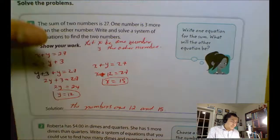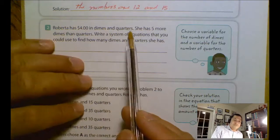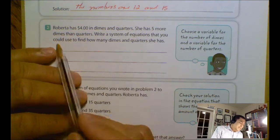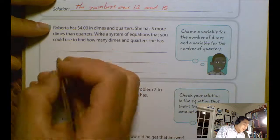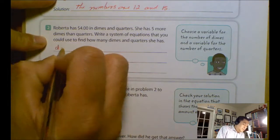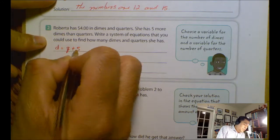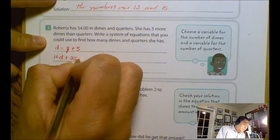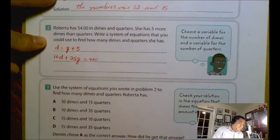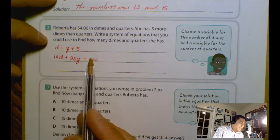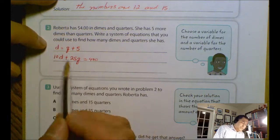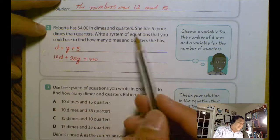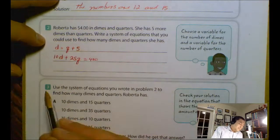Problem number two: Roberta has $4 in dimes and quarters. She has five more dimes than quarters. Write a system of equations that you could use to find how many dimes and quarters she has. I'm going to have the first equation: dimes equals quarters plus 5. And I have 10d plus 25q equals 400. So those are the equations.